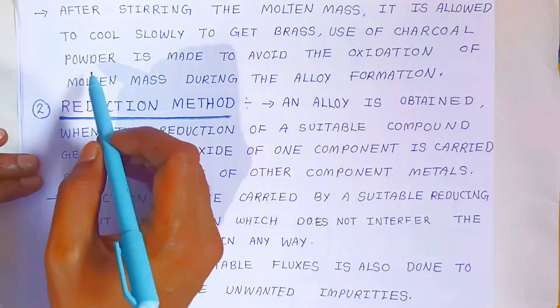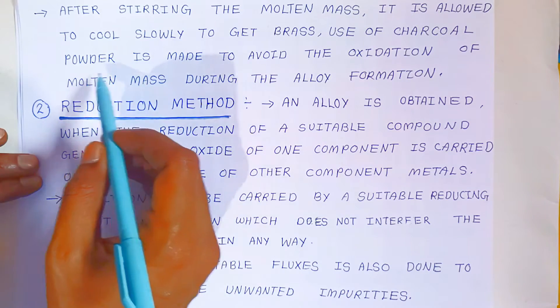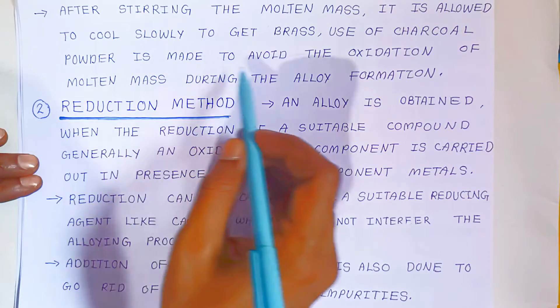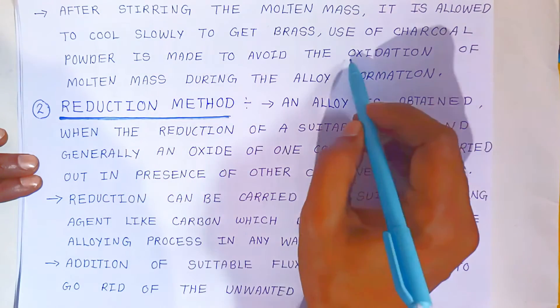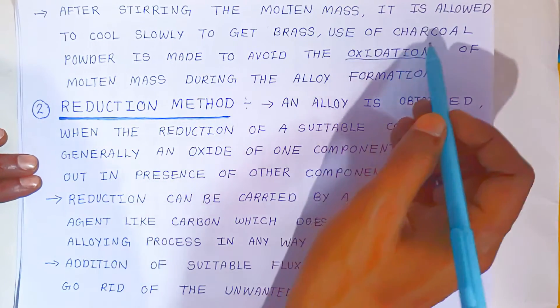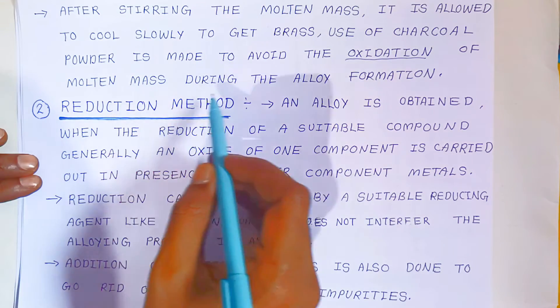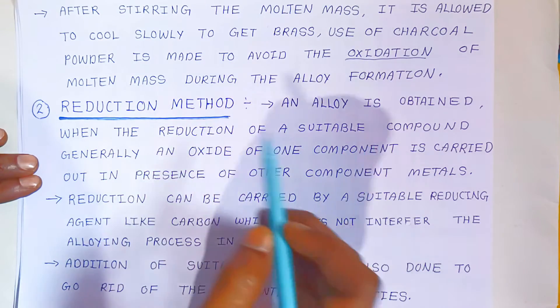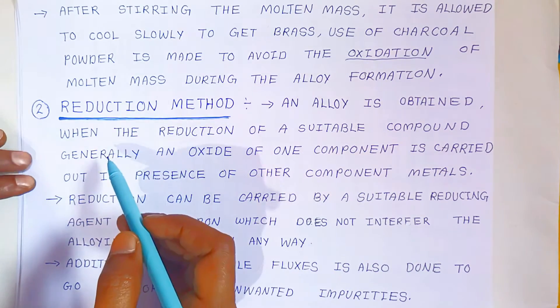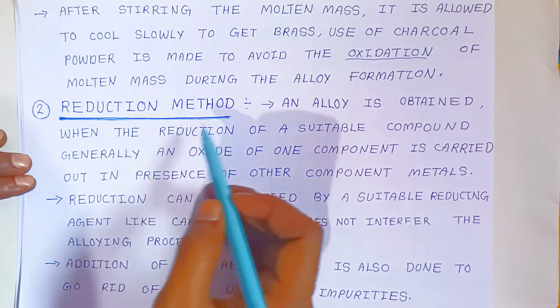Charcoal powder is added to the molten mass during alloy formation to avoid oxidation. The second method of preparation of alloys is the reduction method.